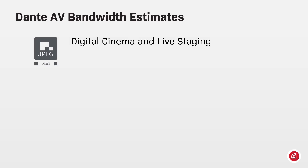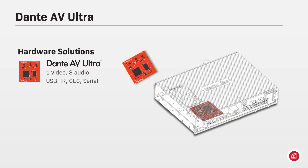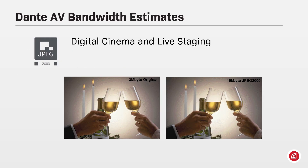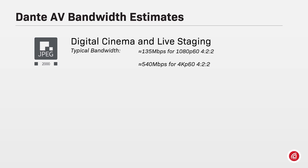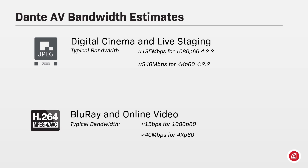The codec JPEG 2000 has been adopted for Dante AV Ultra devices. Commonly used in digital cinemas and live staging, it can compress an image with visually lossless quality. Optimized for 1 Gbps connections, the typical bandwidth is around 135 Mbps for a 1080p 60 frames 422 image and around 540 Mbps for a 4K 60 422.